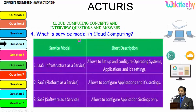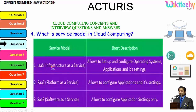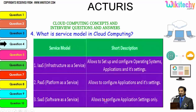The question is: what is the service model in cloud computing? There are three major service models. First, Infrastructure as a Service allows you to set up and configure the operating system, applications, and settings — you are given a server and can install whatever operating system you want. Platform as a Service allocates a specified operating system and you can put any applications and settings. Software as a Service gives you a software and you can configure application settings as needed.